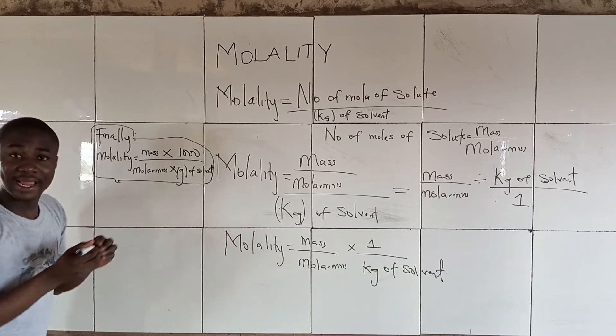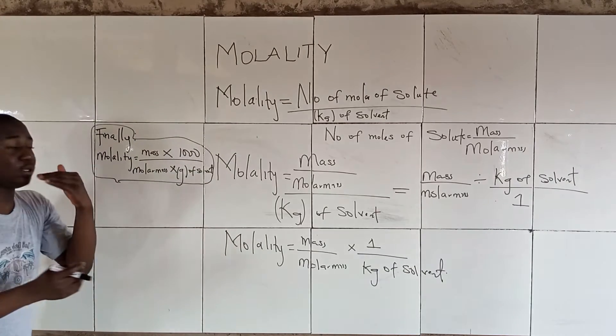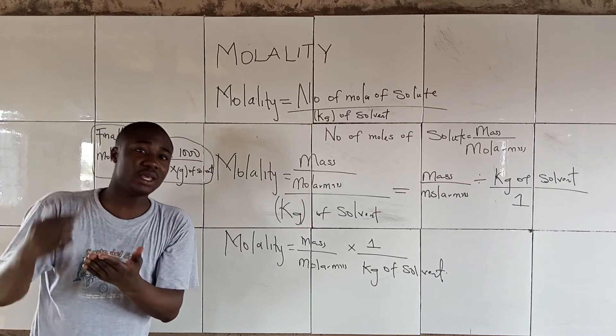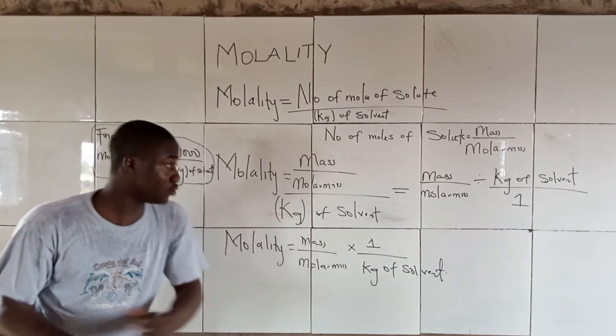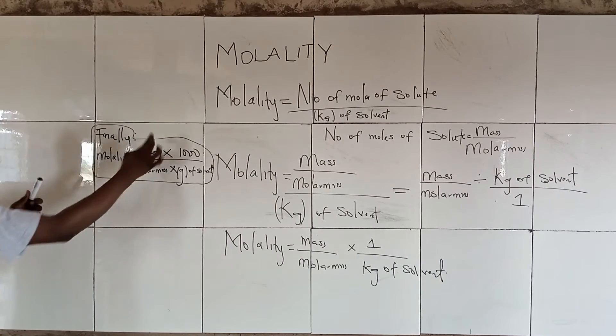This is the final formula for solving molality because our mass should be in grams, not in kilograms, according to chemistry. So from this same equation, we will get another formula which is molality.